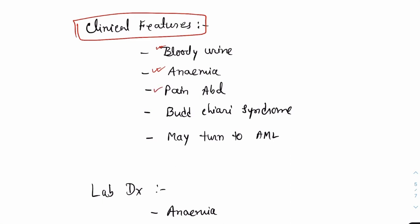There may be pain abdomen, mostly due to venous thrombosis in the abdominal veins. The patient may present with Budd-Chiari syndrome with pain abdomen and sudden onset of ascites. In some cases, the PNH may turn into acute myeloid leukemia.